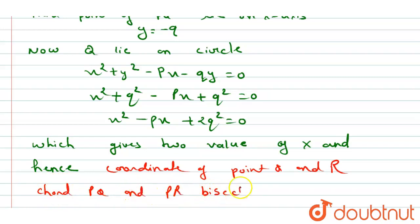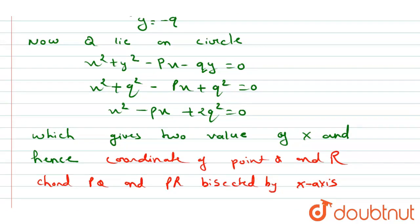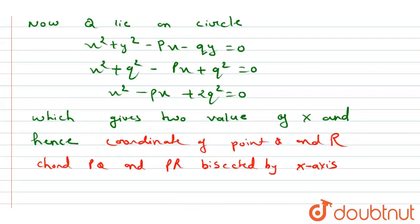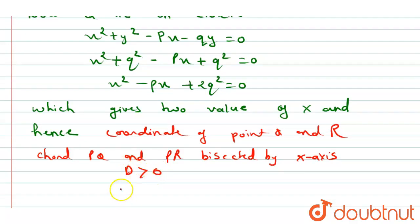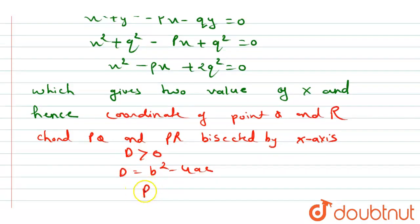In that condition, we can say that the discriminant D is greater than 0. D is greater than 0, and D equals b² - 4ac. We will solve this: we will get p² - 4 times 2q².